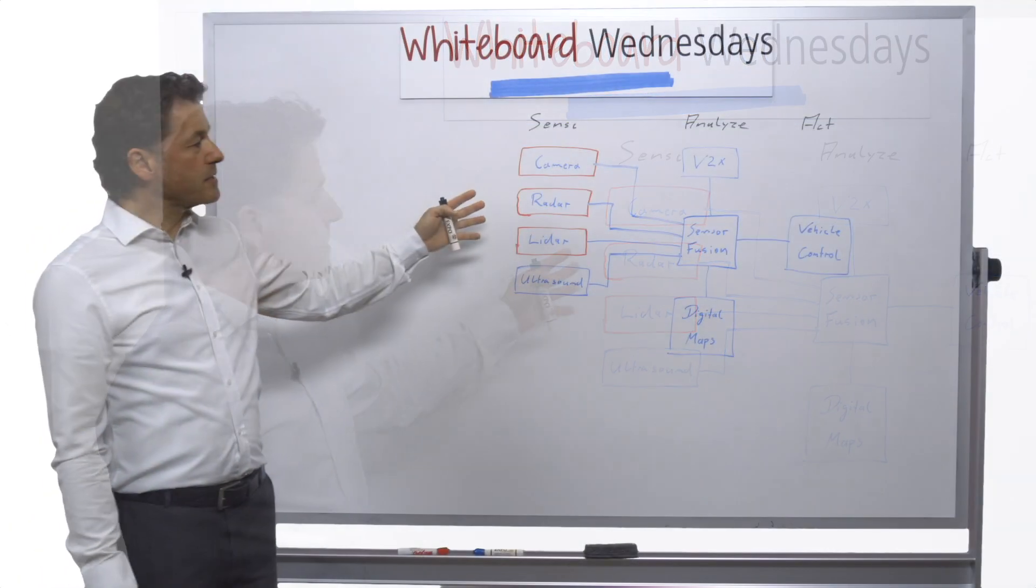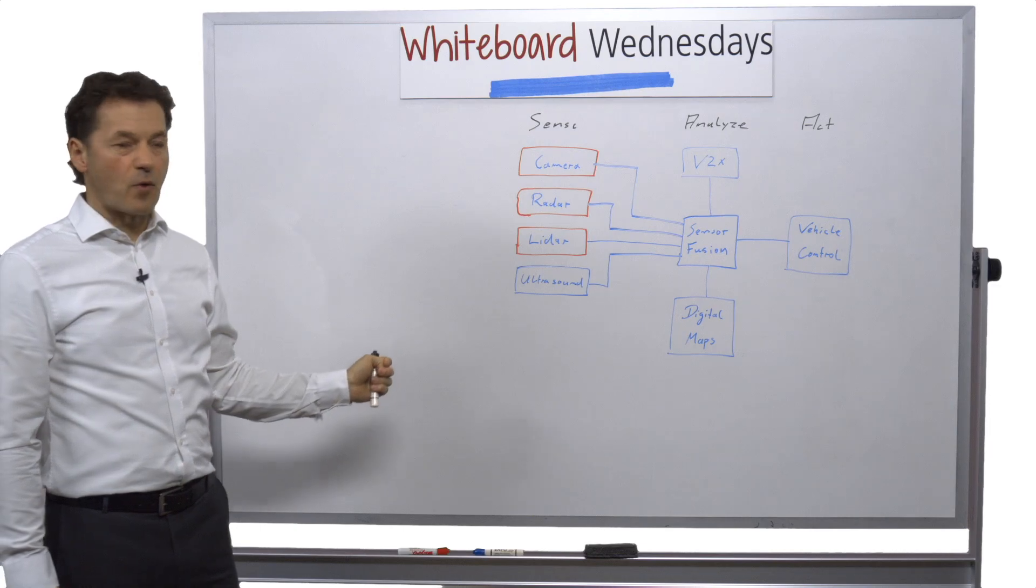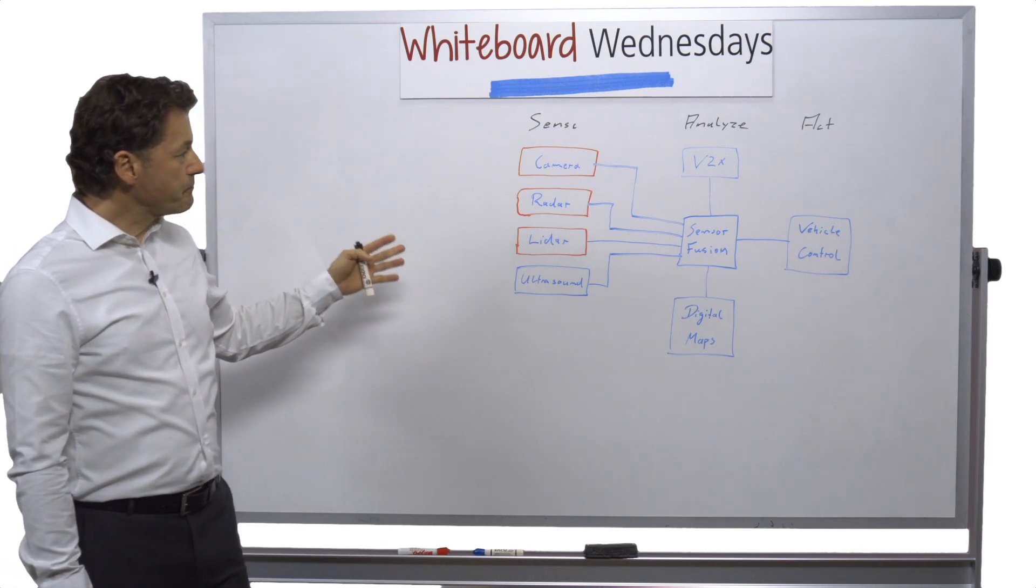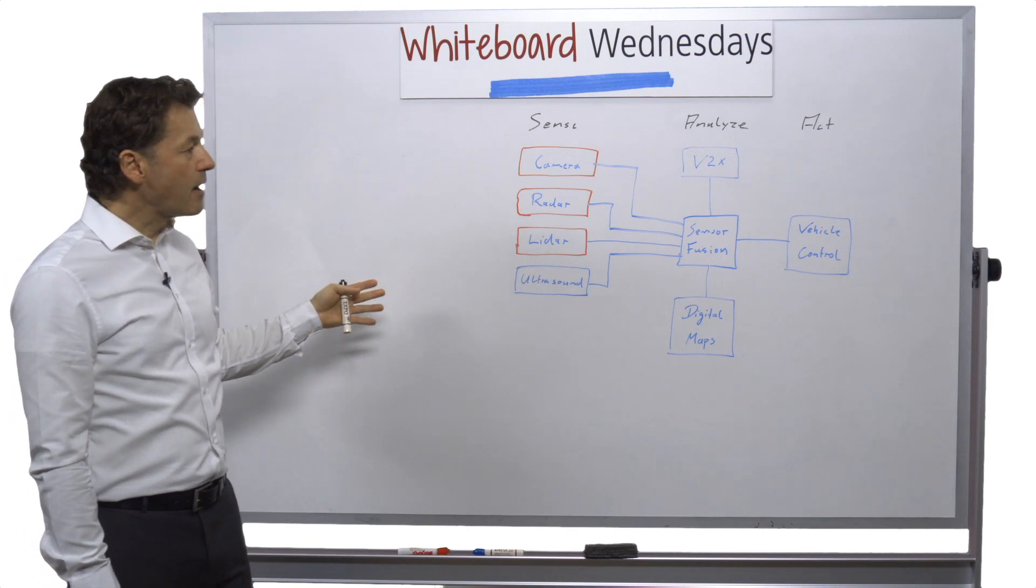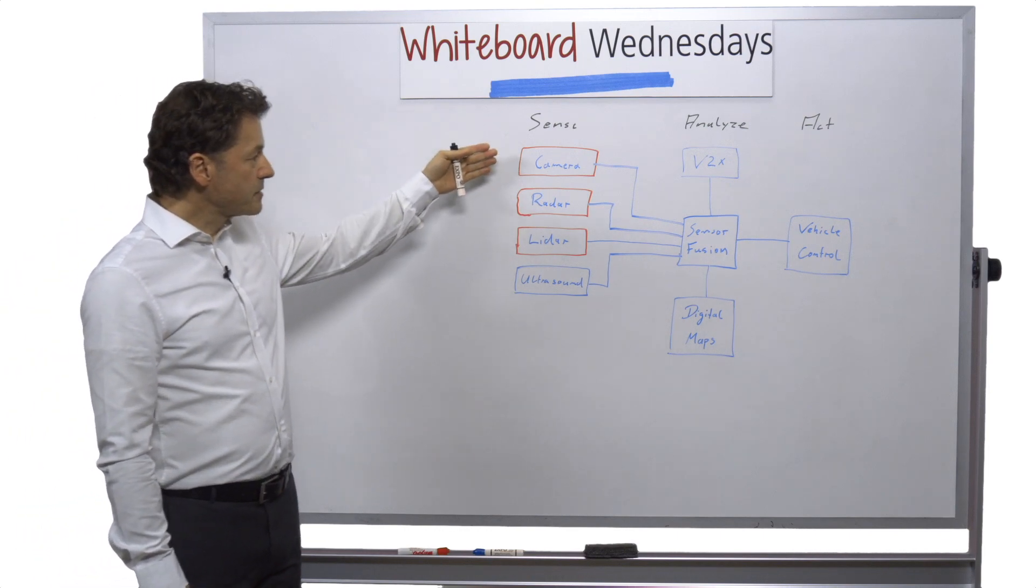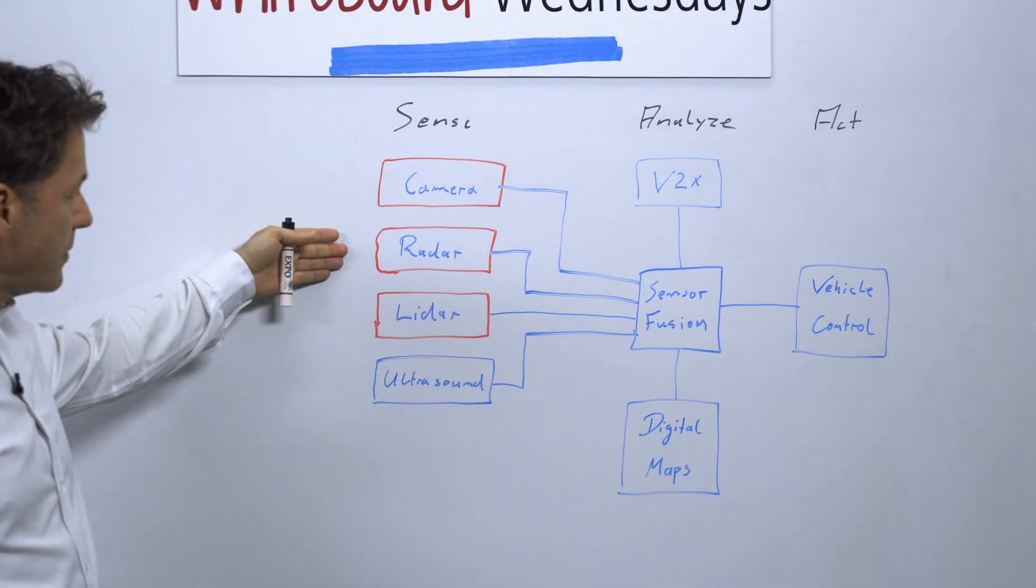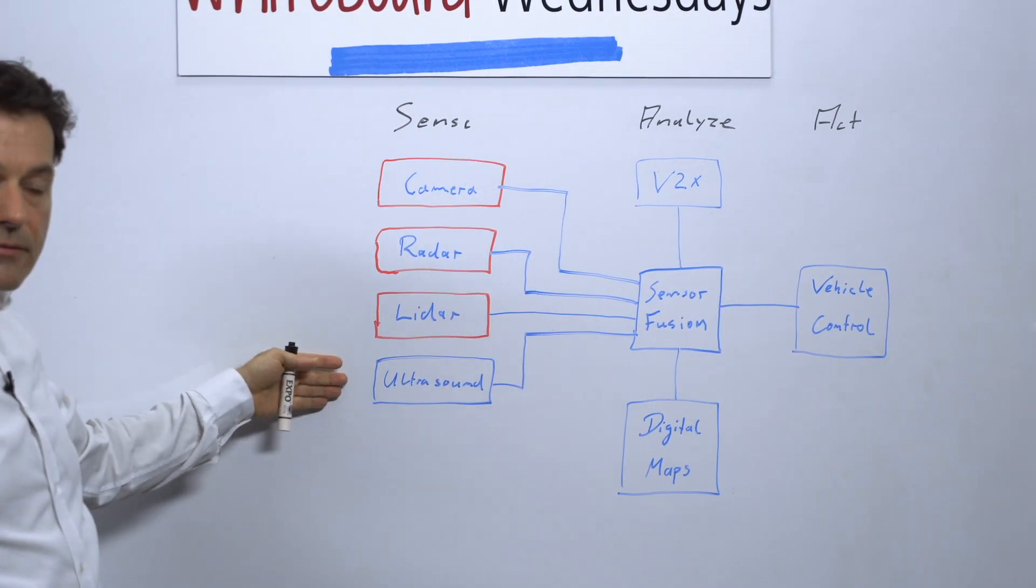This is a sensor fusion platform. For automated driving level 3 up to level 5, you need sensors like cameras, radars, lidars, and ultrasound.